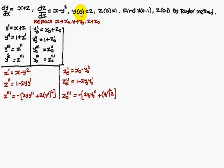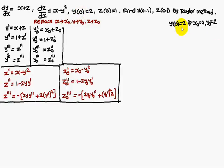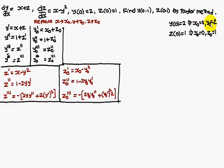What is given: y(0) is 2, meaning x naught is 0 and y naught is 2. z(0) is equal to 1, meaning x naught is 0 and z naught is 1. So whenever you come across x naught write 0, y naught write 2. Here also x naught is 0, z naught is equal to 1.